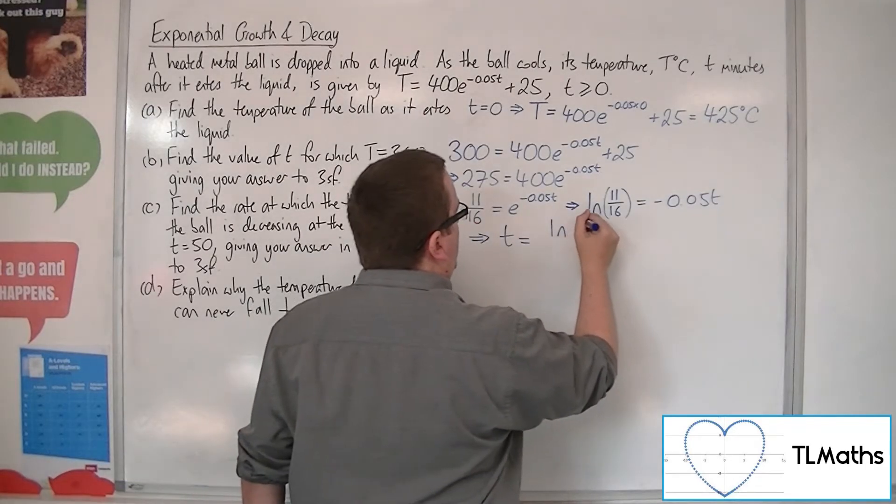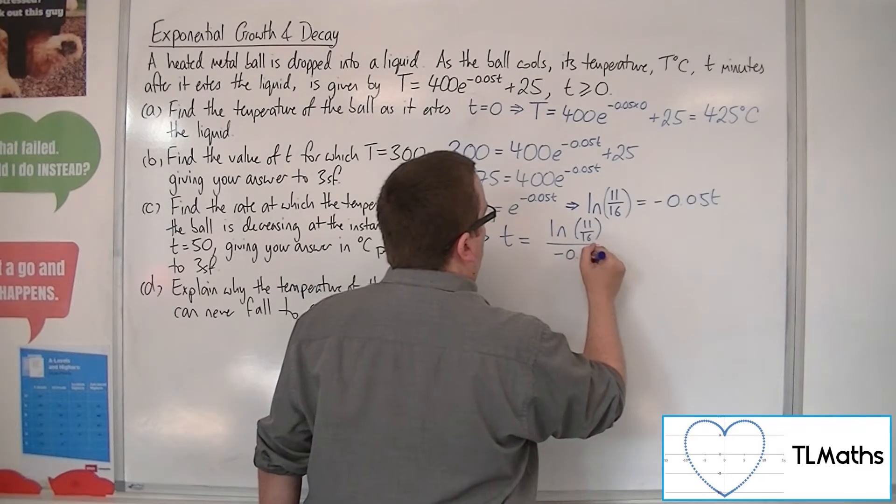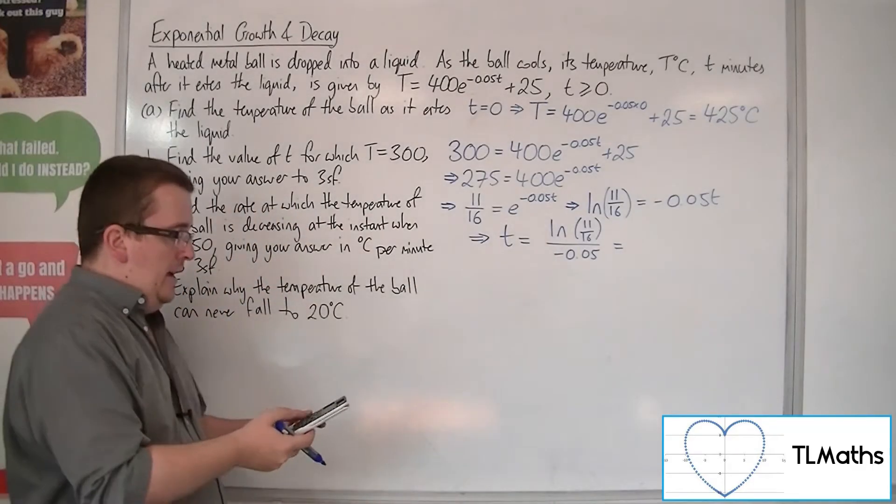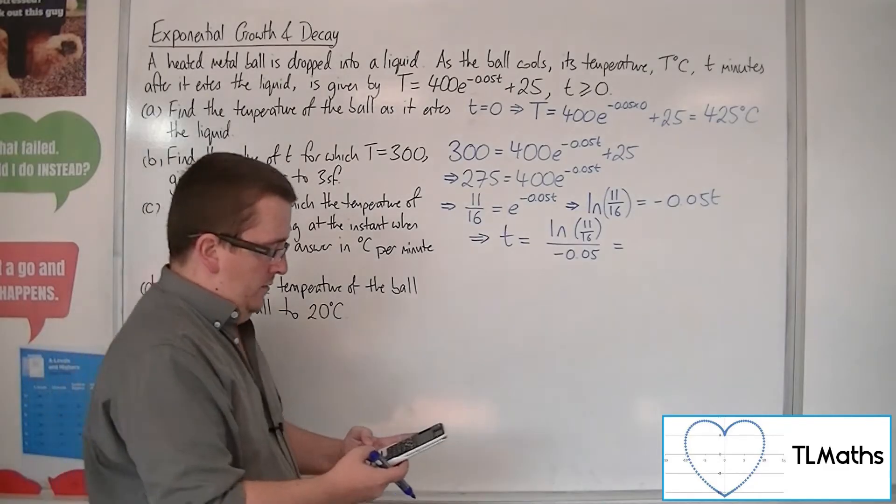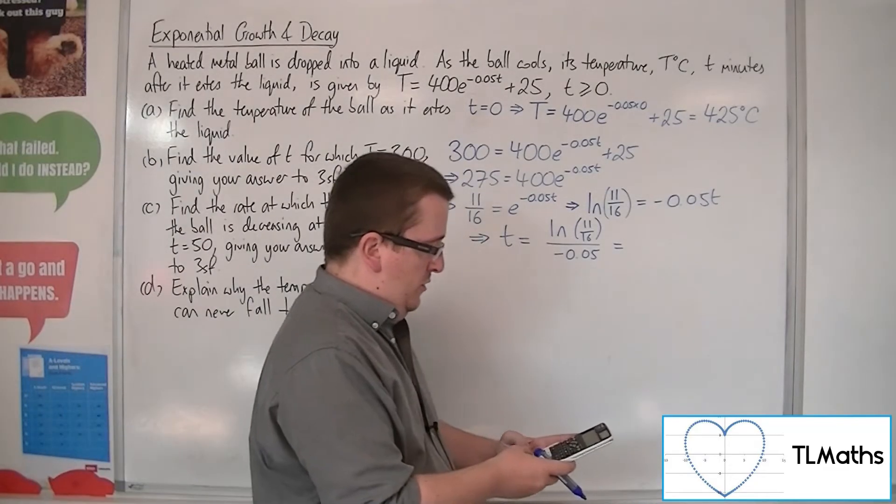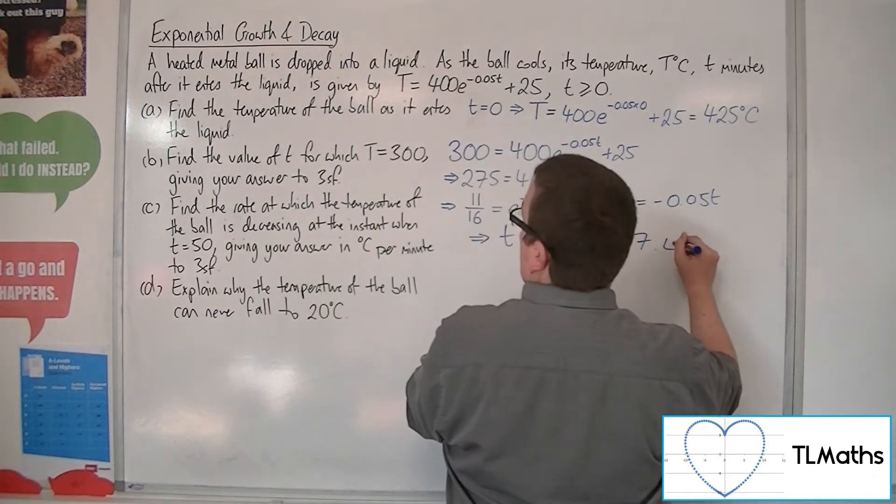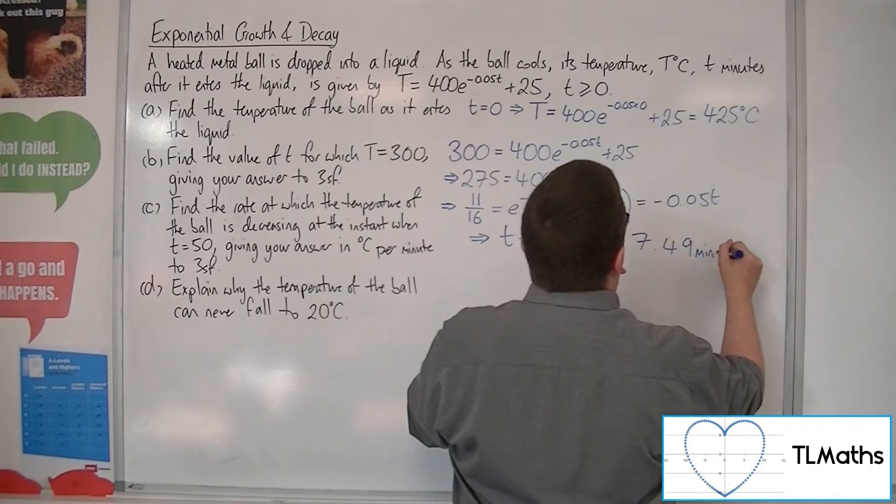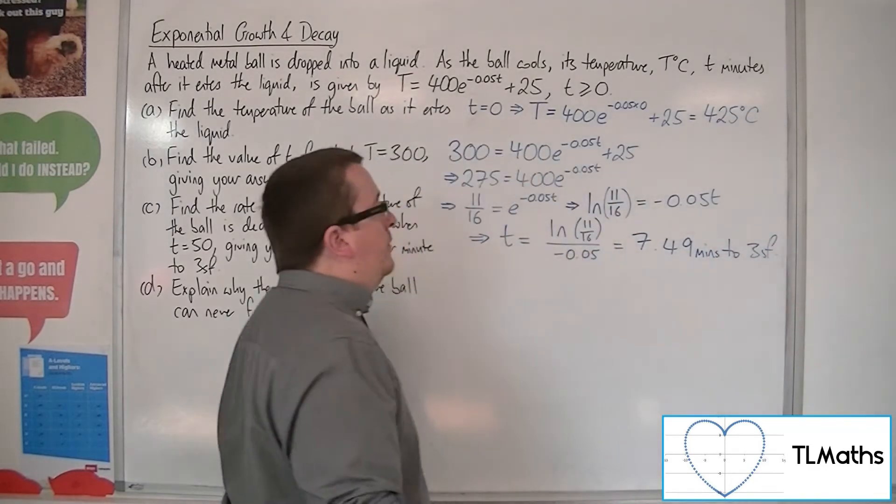So, T is the natural log of 11 sixteenths divided by minus 0.05. So, we want to put that into our calculator. Divide that by minus 0.05, and we get 7.49 minutes to the required three significant figures.